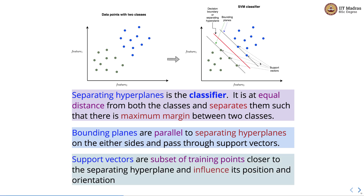What are support vectors? Support vectors are a subset of training points closer to the separating hyperplane, and they influence its position and orientation. If we change the support vectors, the position and orientation of the decision boundary or separating hyperplane will change.